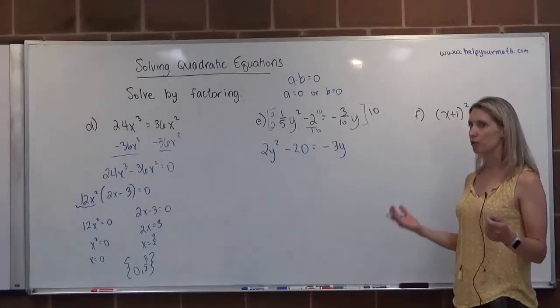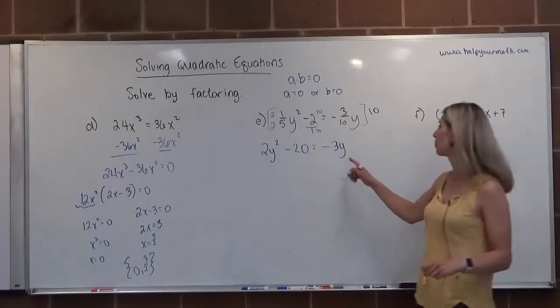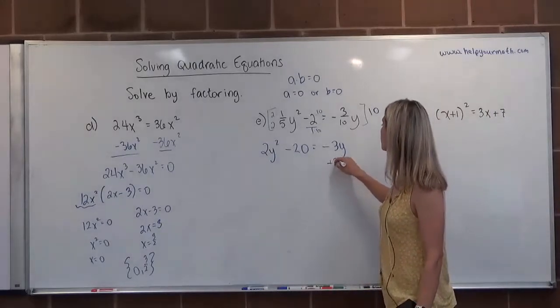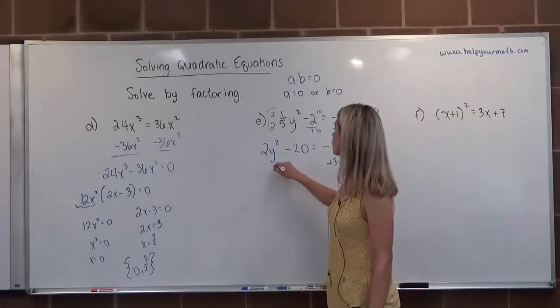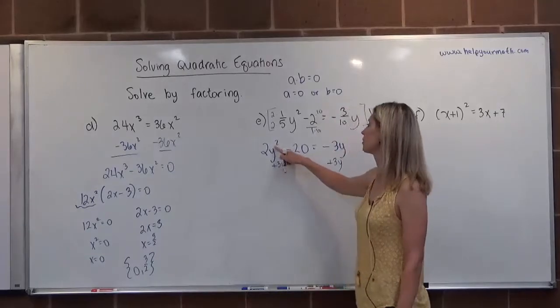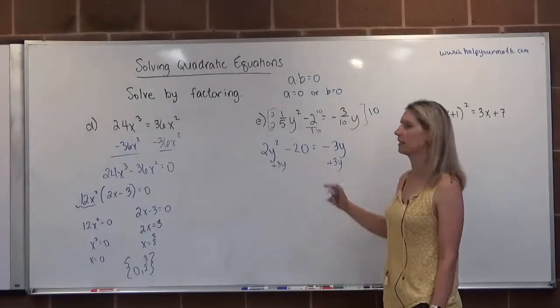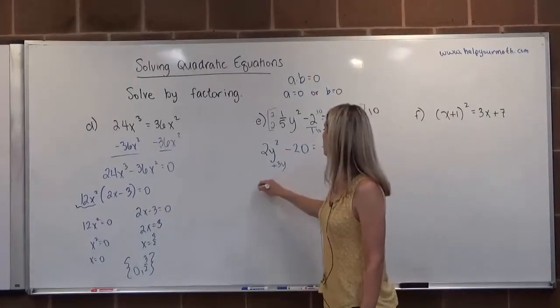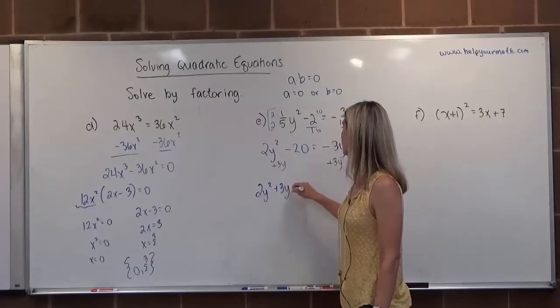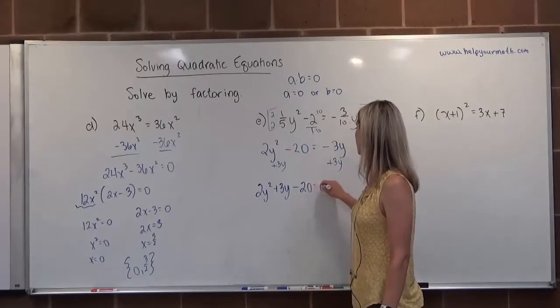If I'm going to solve by factoring, I need to set this equal to 0, so I'm going to add 3y to both sides. I want this going so that it's y squared first, y second, and the constant third. So this would be 2y squared plus 3y minus 20 equals 0.